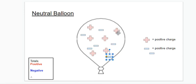Alright, so now I have 1, 2, 3, 4, 5, 6 positive charges. So, I'm going to label that right here. I've got 6 positive charges. And I've got 1, 2, 3, 4, 5, 6 negative charges.